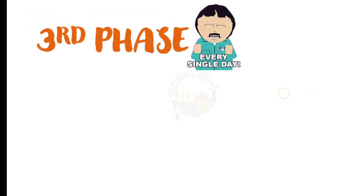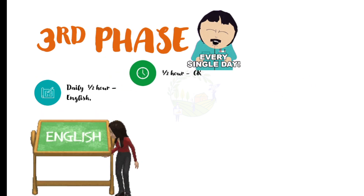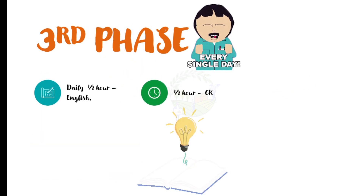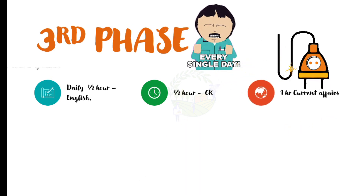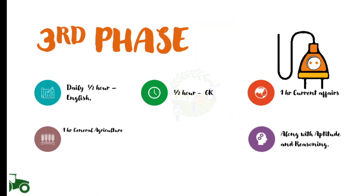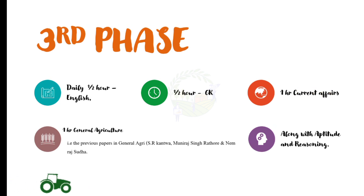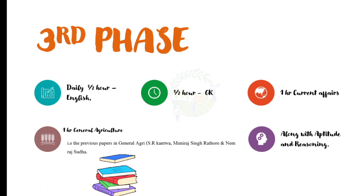For the third phase, do daily one hour of English, one hour of general knowledge, one hour of current affairs, and one hour of general agriculture along with aptitude and reasoning. In general agriculture, focus mainly on the previous year examination papers available in books like S.R. Khandwa and Mundra Singh Rathod.